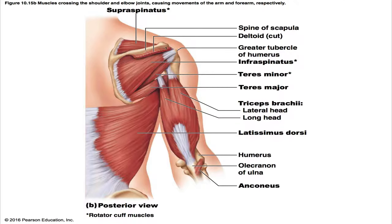The infraspinatus is partially covered by the deltoid and trapezius. Named for its scapular location, it is another rotator cuff muscle. Its origin is the infraspinous fossa of the scapula, and its insertion is the greater tubercle of the humerus, posterior to the supraspinatus insertion. Like the supraspinatus, it is innervated by the suprascapular nerve. Its primary action is to rotate the arm laterally, and it also helps hold the head of the humerus in the glenoid cavity to further stabilize the shoulder joint.